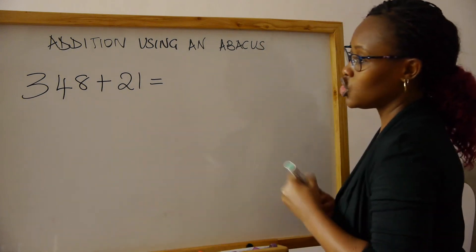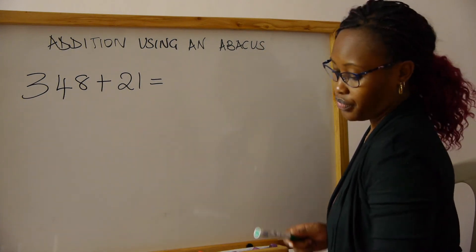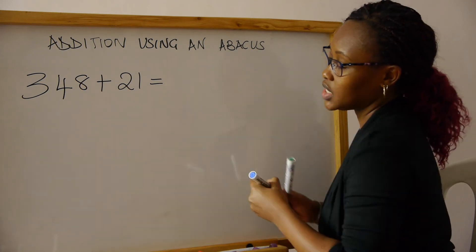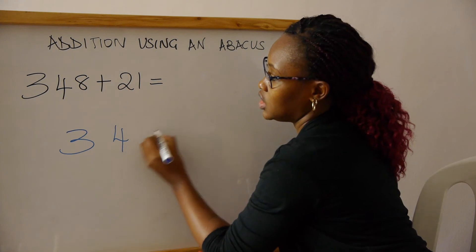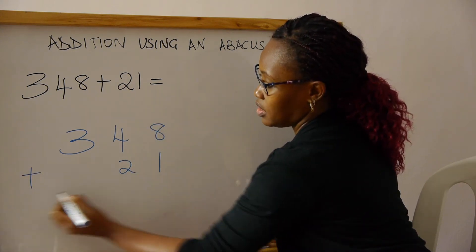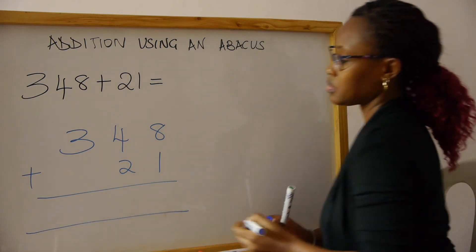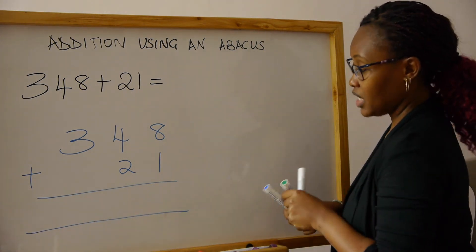So the first thing you do, remember, is to write them vertically. You write this sum vertically, which is 348 plus 21, and show the place values.